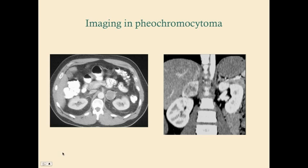Here are two CT images — one axial and one frontal — showing pheochromocytomas. They could easily be mistaken for other adrenal masses. One shows a 3.8 by 3.2 centimeter mass noted by the clinician. Pheochromocytomas can generally get to be quite large.